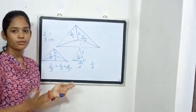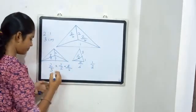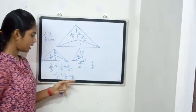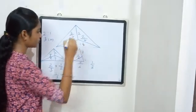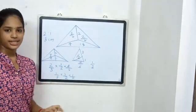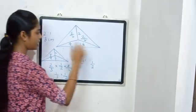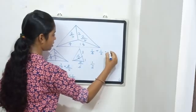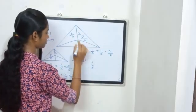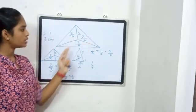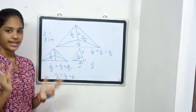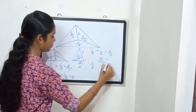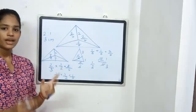One-third of one-half equals one-sixth. We add two fractions: one-sixth plus one-sixth equals two-sixths. So three triangles give two-sixths. In lowest form, two-sixths simplifies to one-third. Two-sixths in lowest form equals one-third.